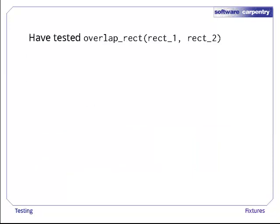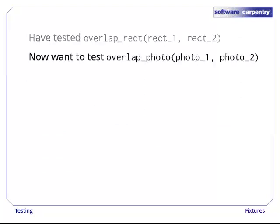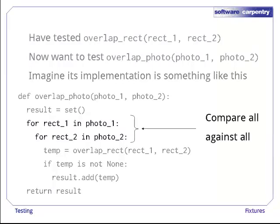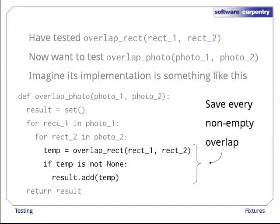We've already tested a function called overlap_rect that finds the overlap between two rectangles. We're confident it works, so now we want to test overlap_photo. We don't actually need to know how it works, but we imagine that its implementation looks something like this. The two loops get rectangles from the first and second photo respectively so that we're comparing all against all. Inside the loop we compare those rectangles and save their overlap if it's non-empty.